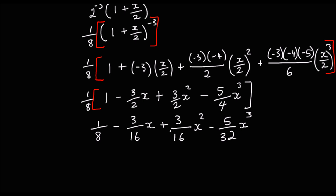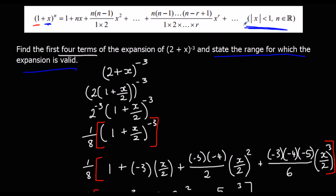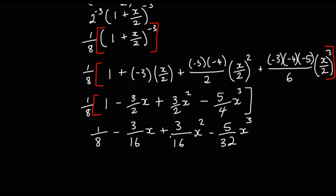There's our expansion for the first four terms. We also need to state the range for which it is valid. It's valid when |x term| < 1, so when |x/2| < 1. Multiplying both sides by 2, we get |x| < 2, or equivalently x < |2|. Any of those forms would be fine.